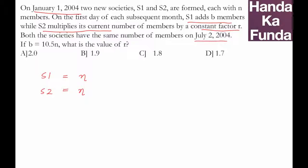In the six-month period, how many people will be added? In group S1, b members are added each month, so it will be n plus 6b. In S2, it's multiplied by ratio r, so it will be multiplied six times: n·r^6.